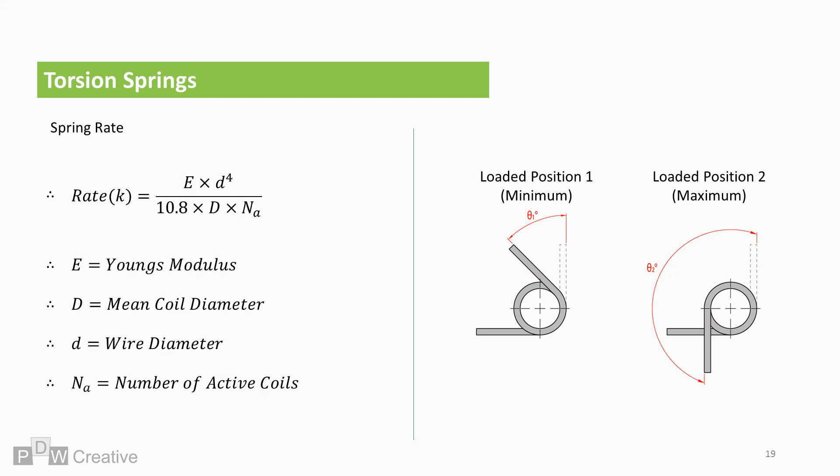The alternative way to calculate the rate is using this calculation. Young's modulus times wire diameter to the power of 4 divided by 10.8 times mean diameter times the number of active coils in the spring.